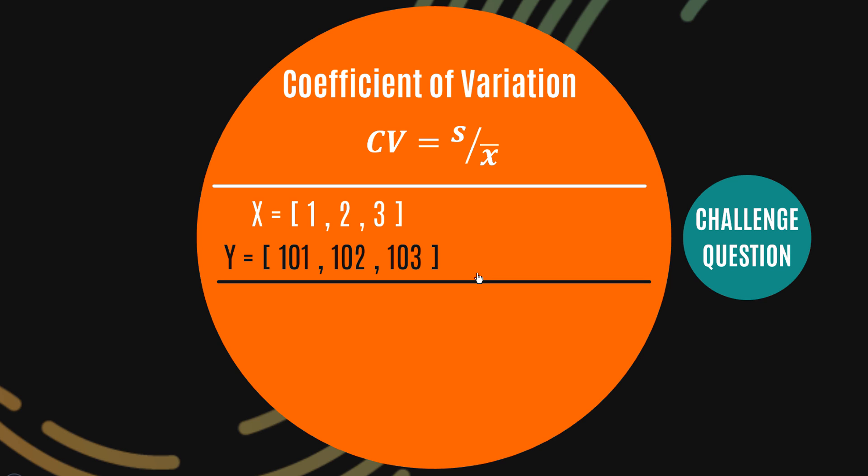Now the first thing we might want to do is calculate the mean of each of these two data sets, and this is fairly trivial, right? The mean for X happens to be 2, you can just see that visually. The mean for Y is going to be 102, again really straightforward.